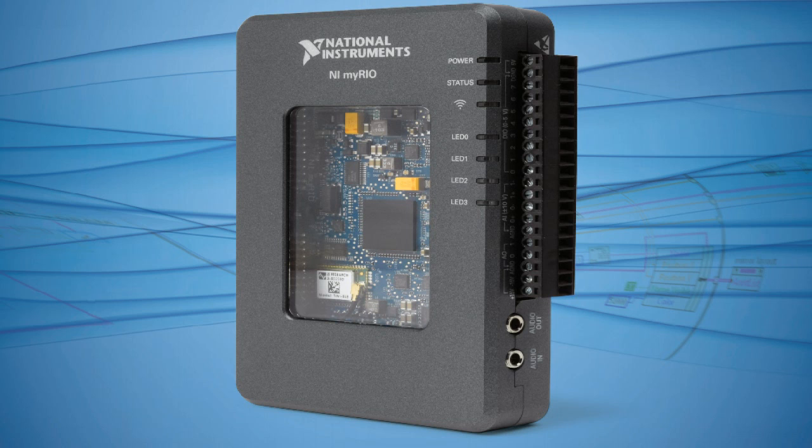The key feature of the MyRio that was useful for my project was the onboard FPGA chip, which has a clock rate of 40MHz. This allowed me to program time critical functionality essential to my project, such as the pulse width measurement logic.